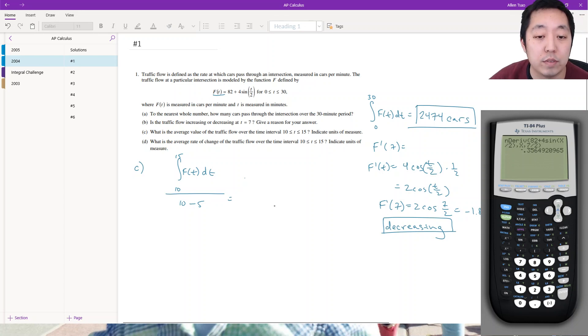This is how you do the average value. We do the integral: 82 plus 4 sine x divided by 2, integrate over x from 10 to 15, then divide that by 5, which is the width of the interval. That's 81.9 cars per minute, because it's a rate still—the average value of f is still in cars per minute.